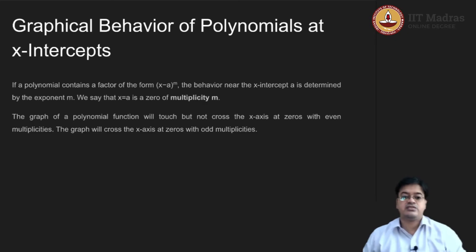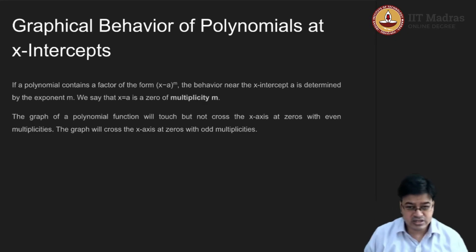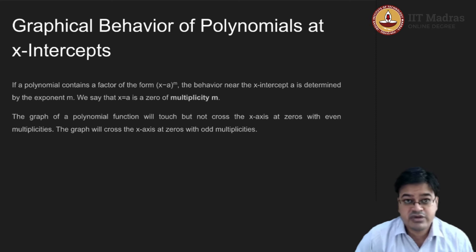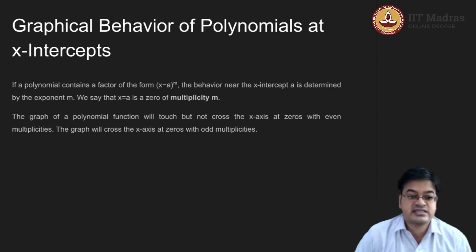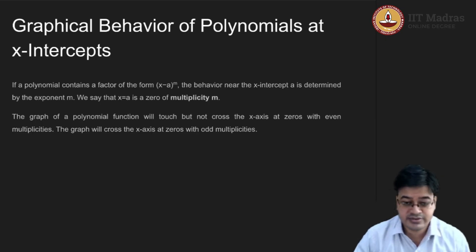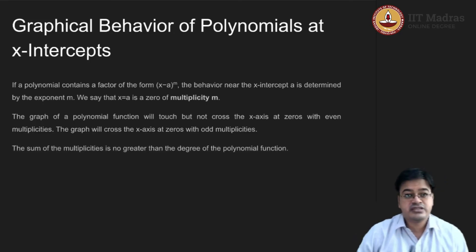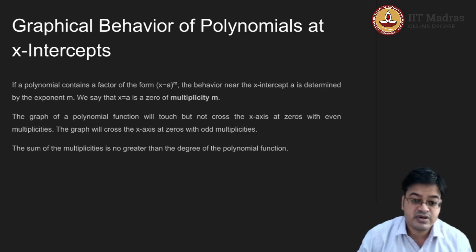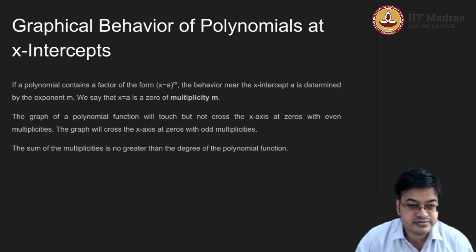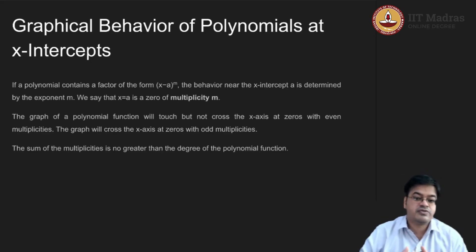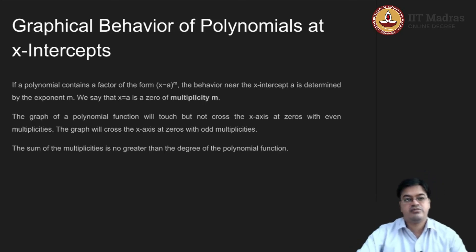The graph of a polynomial function will touch but not cross the x-axis at zeros with even multiplicities, and the graph will cross the x-axis at zeros with odd multiplicity. Also, the sum of the multiplicities is always less than or equal to the degree of the polynomial function.